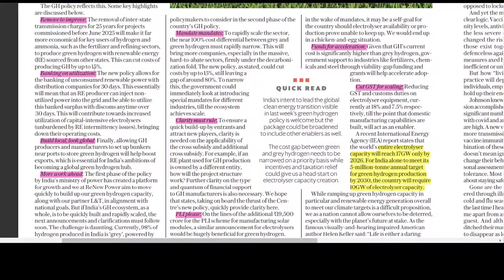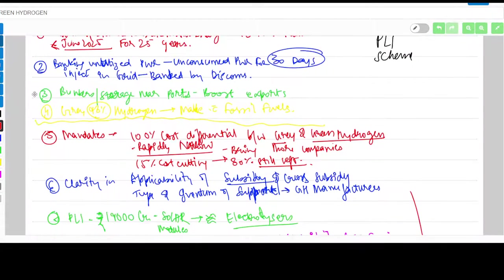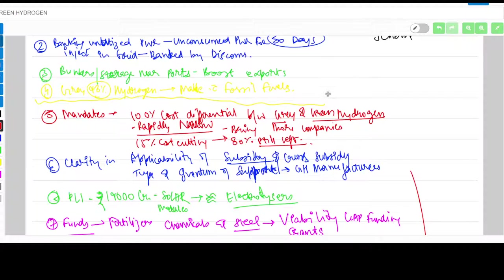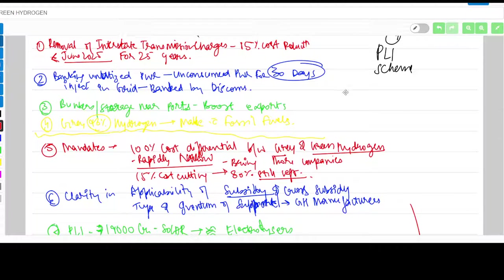Second is banking on utilization. If a manufacturer is producing hydrogen that cannot be utilized now, this hydrogen can be used to produce electricity which can be put into the discom grids and banked for 30 days. This means they can take it back from the grid within 30 days and utilize it again, helping store surplus electricity so it doesn't get wasted.